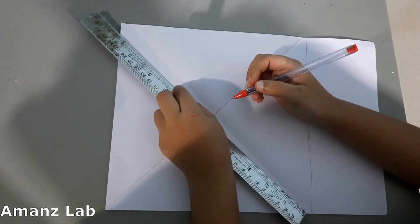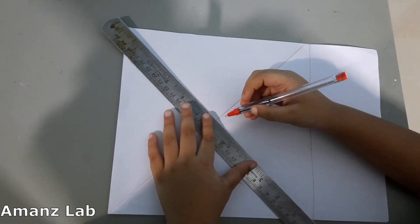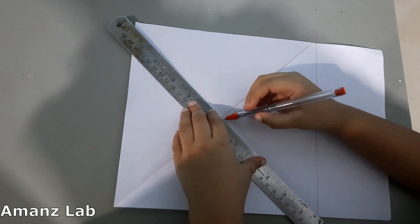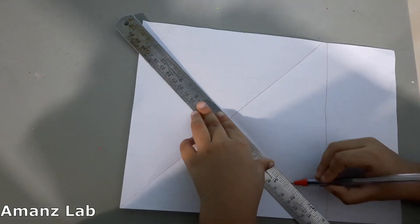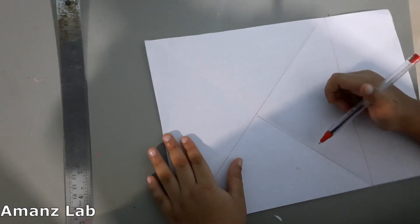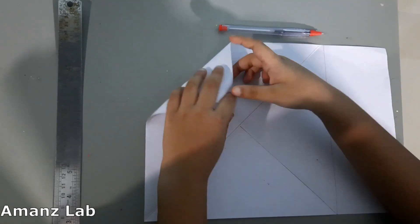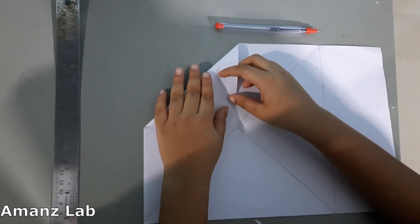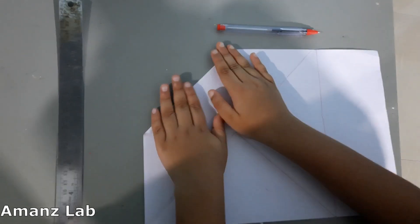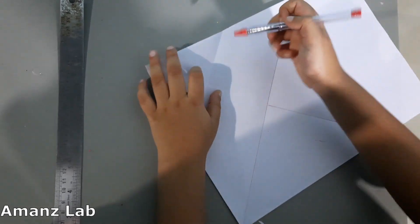Now we will divide one of the triangles into two triangles like this. Now let us make a medium triangle from the other side. First we have to fold it like this. Then we have to draw.